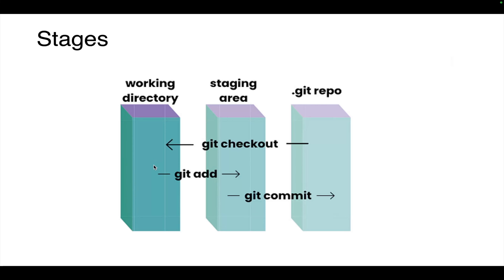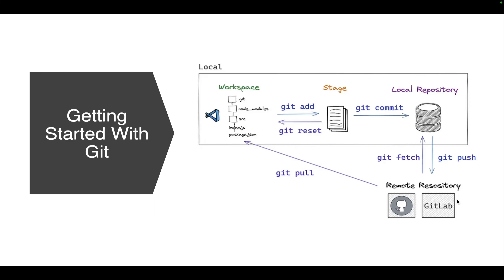The local repository is where git permanently stores committed changes. It allows you to review your project's history, revert to a previous state, and collaborate with others. You commit staged changes with `git commit`, and whatever you have committed sits in the local repository in the `.git` folder. The remote repository is a centralized location typically hosted on a server like GitHub, GitLab, or Bitbucket, where you can share and collaborate on your project. You use `git push` and `git pull` to transfer committed changes between the local and remote repository.